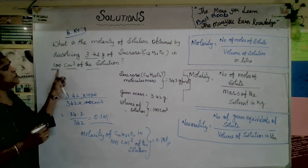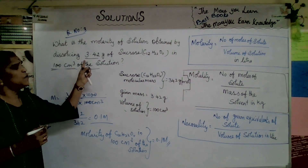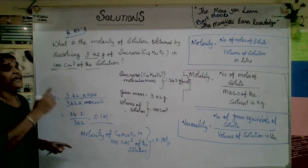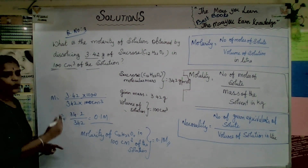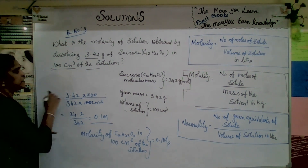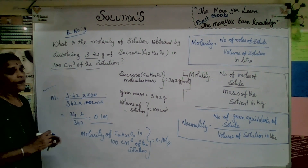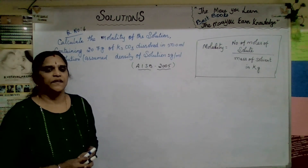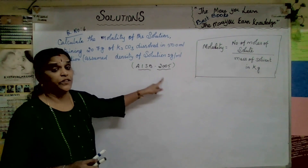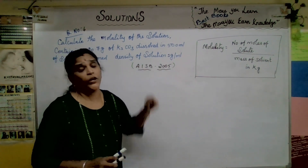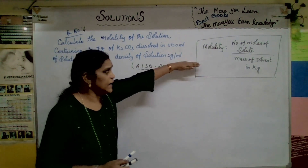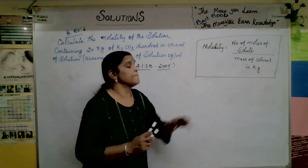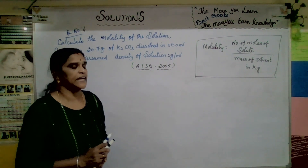First, see the question, identify the given points, and find what they are asking. Calculate accordingly using the formula. Now for another question: molality equals number of moles of solute divided by mass of solvent in kg.